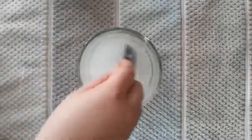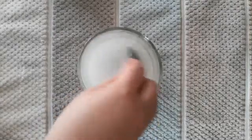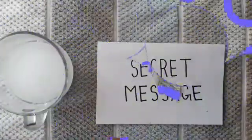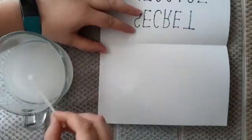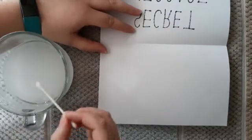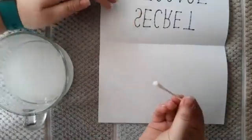Next, grab your paper and dip your ear swab into the baking soda and water solution. Let some of the extra water drip off to prevent smears and drops onto the paper. Now you can write your secret message.